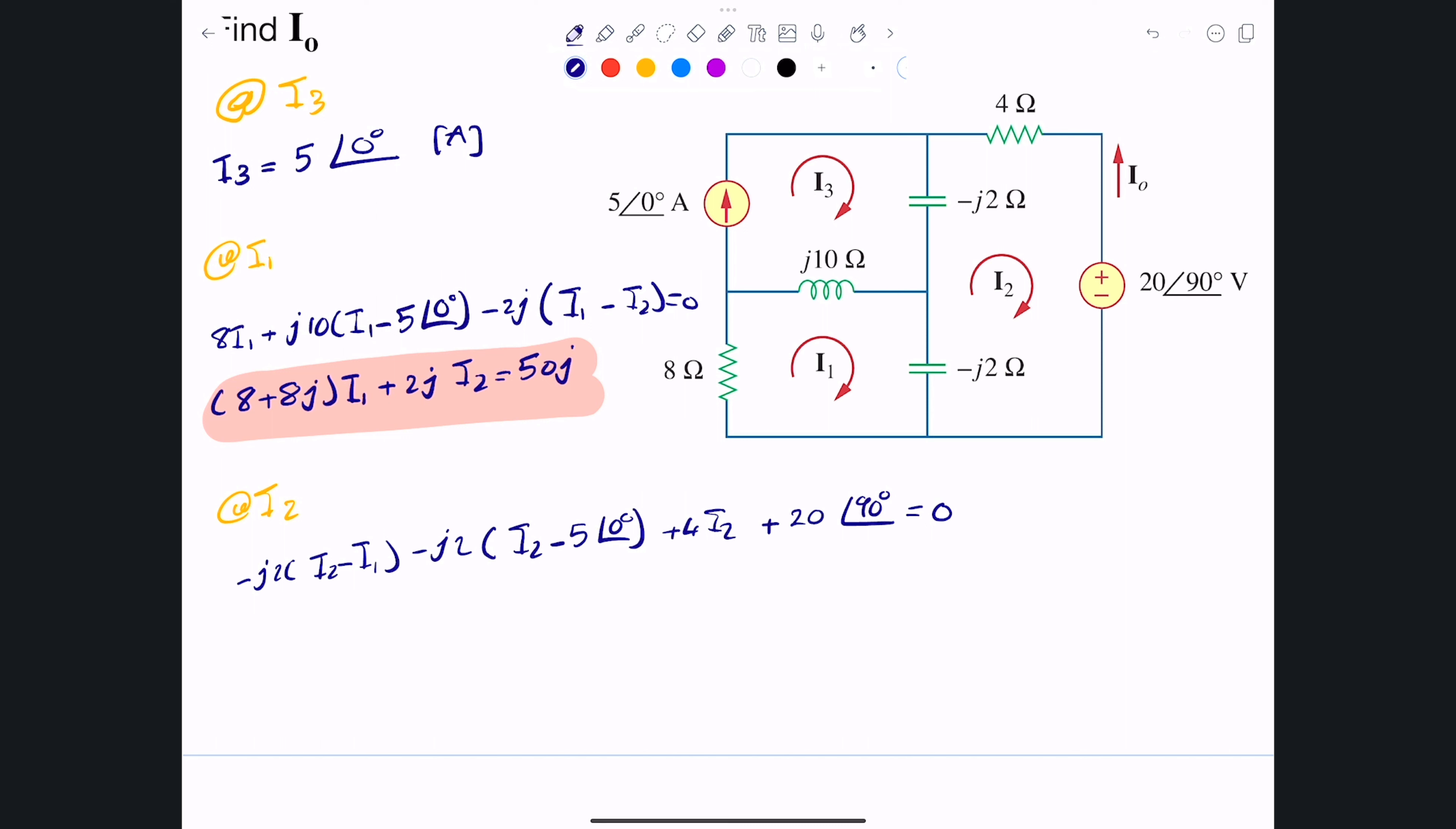Now we have the second equation. We need to clean it so that it's coefficients of I1 and I2, and that will be j2·I1 + (4 - j4)I2 equals -j30. So this is now the second equation.